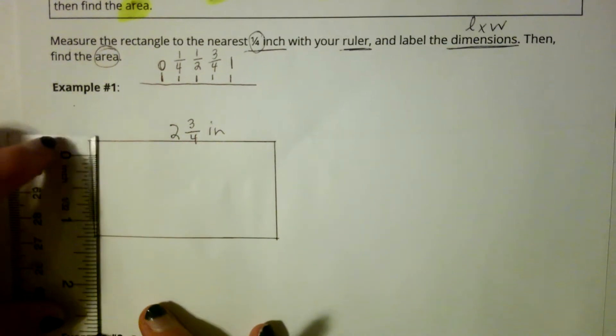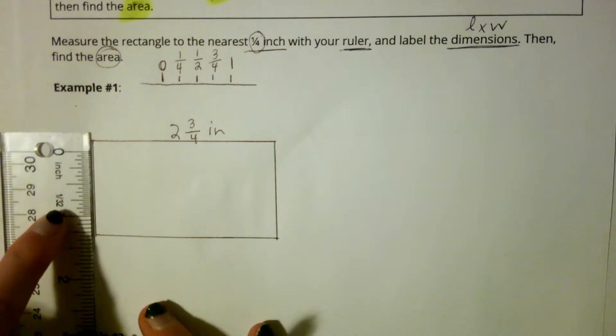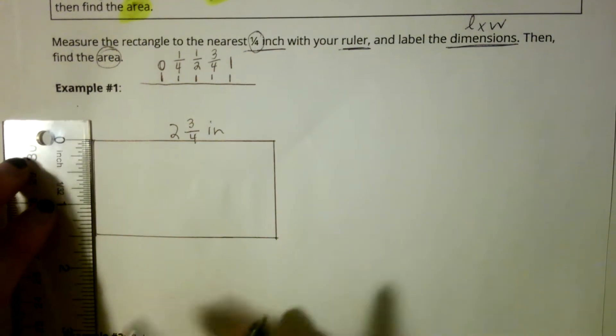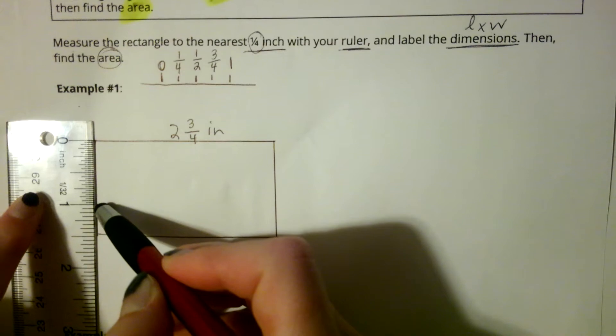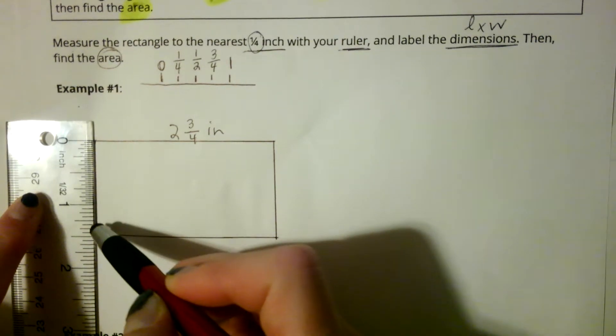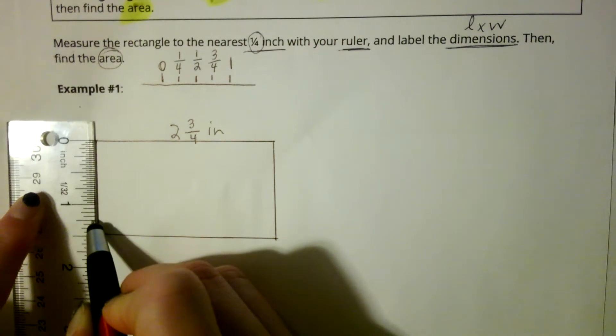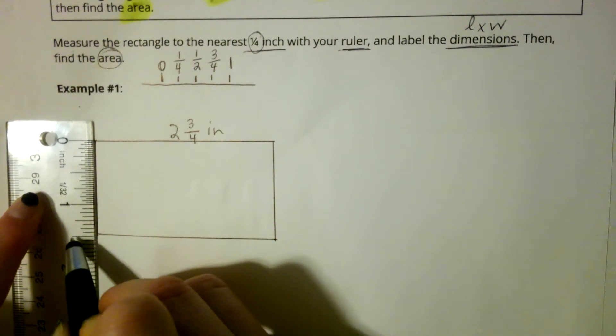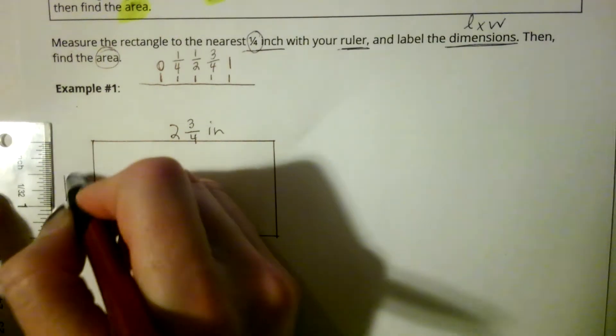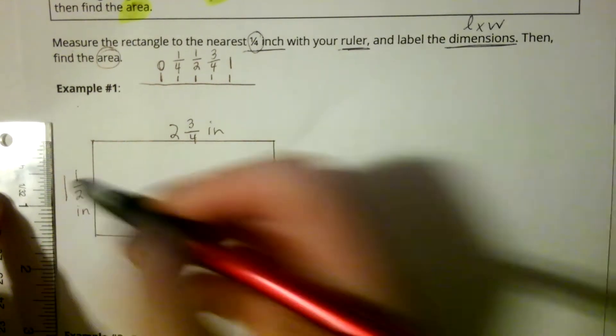Let's measure the width. Again, I'm not going to start at the end of my ruler. I'm going to start right at zero. It's past one, so it's going to be a little bit more than one. And now I'm looking for my tick marks. I see my first tick mark, which would be one-fourth, two-fourths, which would be one-half. So this is a length of one and one-half inches.